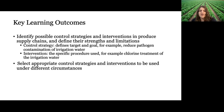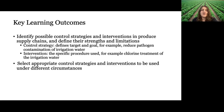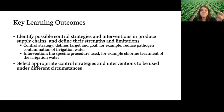We're going to be defining control strategies and interventions as separate things, even though they're often used interchangeably. A control strategy talks about the target and the goal. For example, if our target is irrigation water and our goal is to reduce pathogen contamination in that irrigation water, the control strategy is defined as 'reduced pathogen contamination of irrigation water.' An intervention is the specific procedure used — for example, chlorine treatment of that irrigation water.